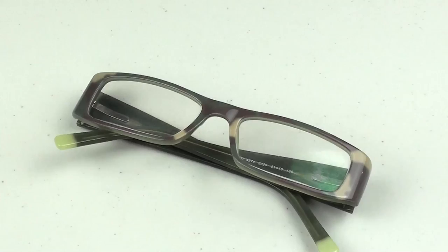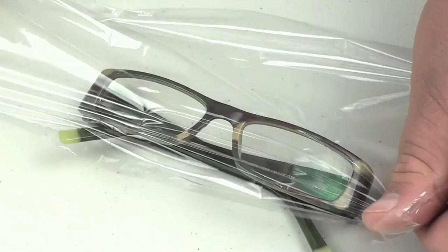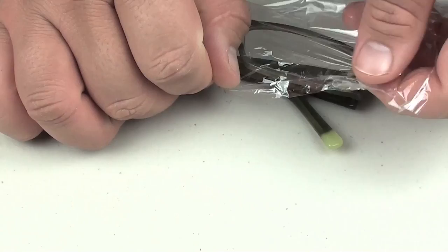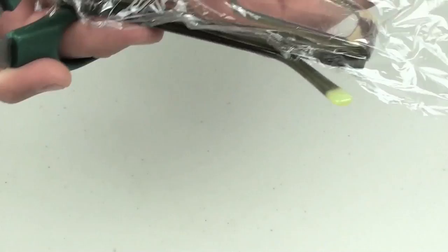The best way to protect your glasses is to get some cling wrap and cover the front of your glasses tightly. Then using some scissors, cut around it to make it neater.